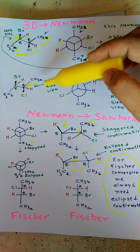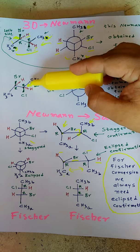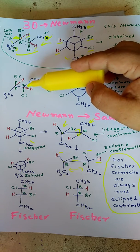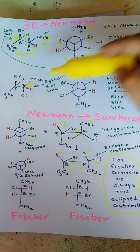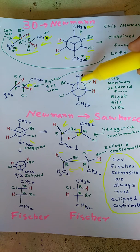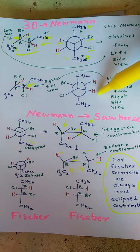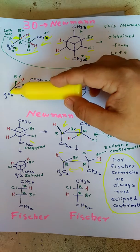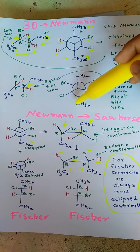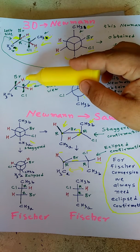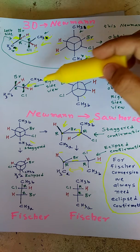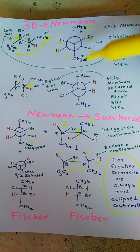Similarly, when we view this molecule from the right-hand side from the center, what happens is now left-hand side is chlorine and right-hand side is hydrogen. Now methyl is above, chlorine is on the left-hand side, and hydrogen is on the right-hand side. For this chiral carbon, methyl is below, bromine is on the left-hand side, and hydrogen is on the right-hand side.